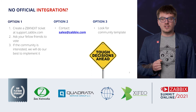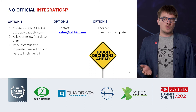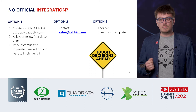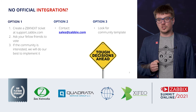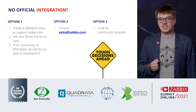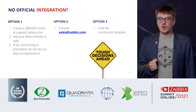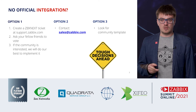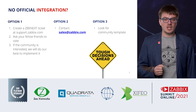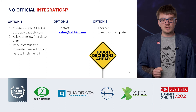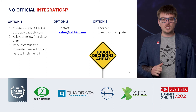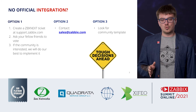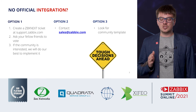If you didn't find an official integration, there are three options. The first one: you can come to our public Jira, create a Zabbix Next ticket, ask your fellow friends to vote, and if the community is interested we'll do our best to implement it. The second option — the fast way to your integration — is to contact our sales department and they will work out a great deal to make sure Zabbix comes with the integration you need.